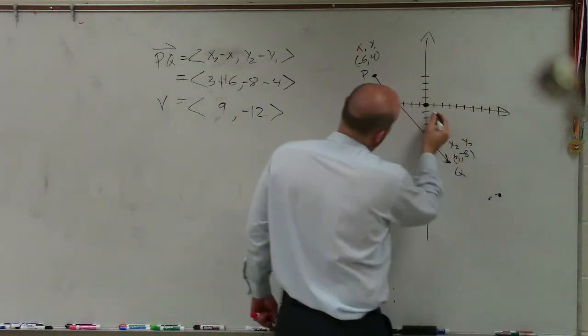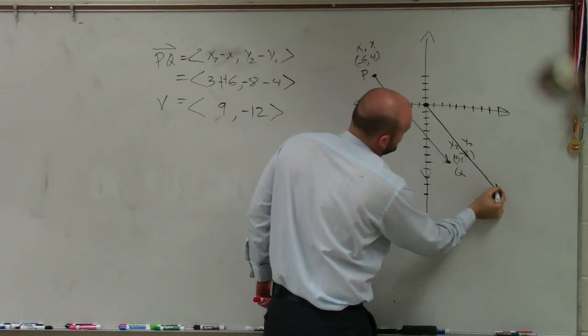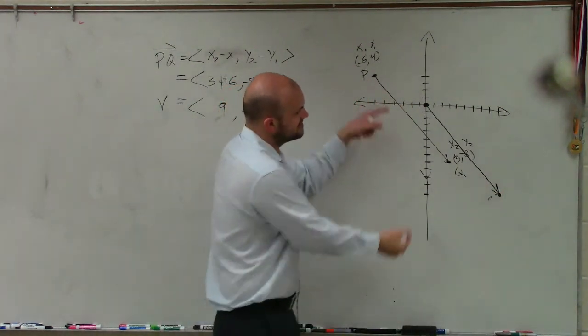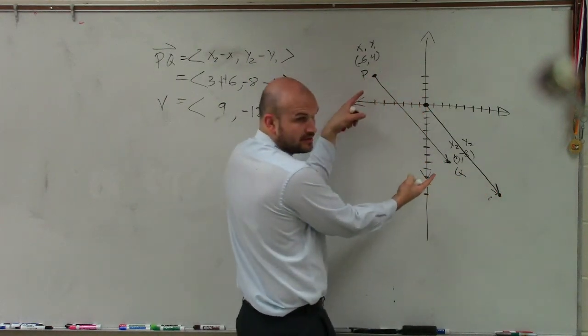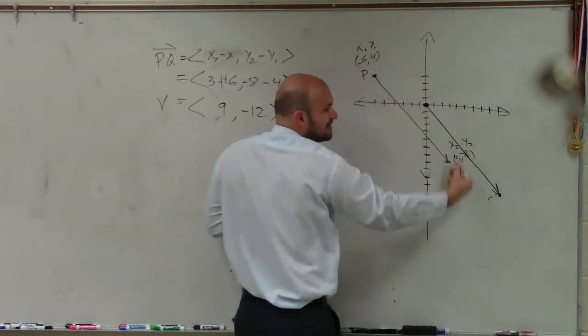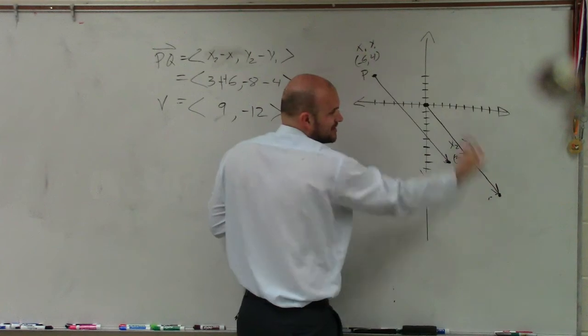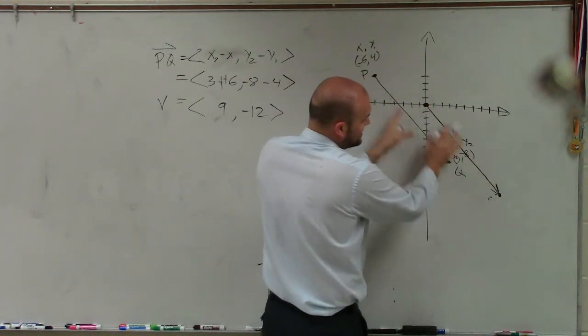OK? So now this vector, and it might not be the best representation of it. But what I want you to see is when you look at this, does this look like it's the exact same vector, but just transformed over here? Right? It has the exact same length, which we call the magnitude, but in the exact same direction. I know my graphing is a little off, but you can see that this direction is exactly the same.